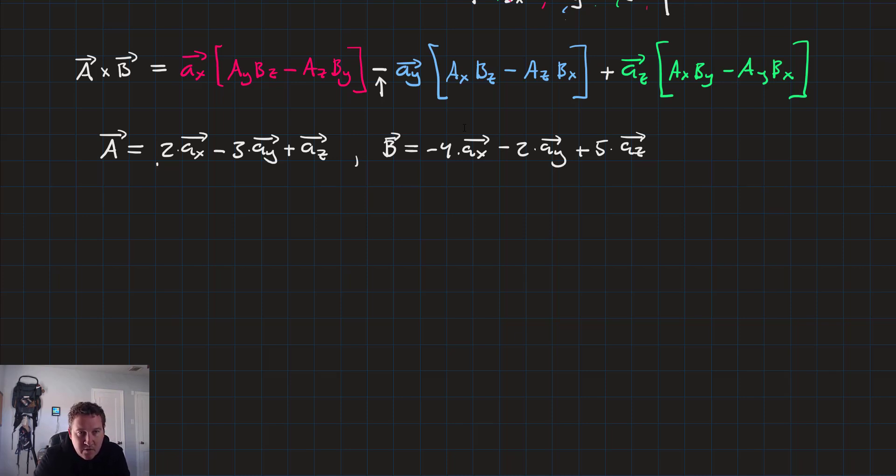So here we can see that our components. We've got a x is equal to 2, a y is equal to negative 3, and a z is equal to 1. And on the b side, we've got b sub x is equal to negative 4, b sub y is equal to negative 2, and b sub z is equal to 5. So we'll plug everything into that equation that we've got there at the top.